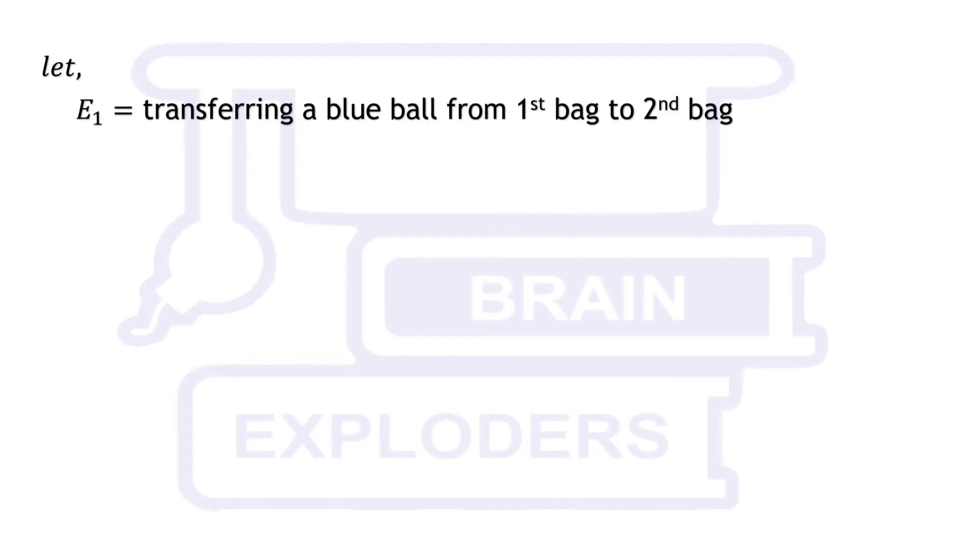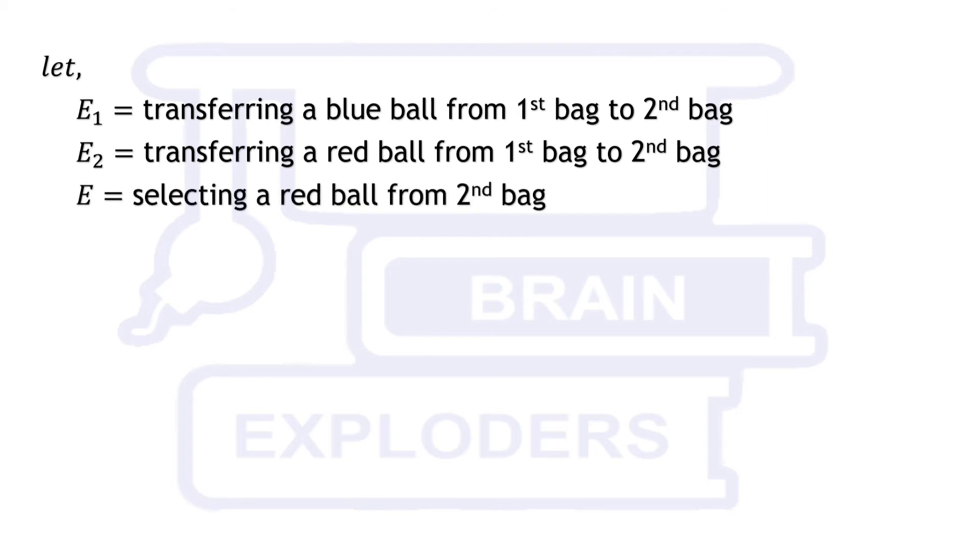Let us assume that E1 is the event of transferring a blue ball from first bag to second bag. E2 is the event of transferring a red ball from first bag to second bag and E is the event of selecting a red ball from second bag.